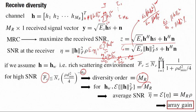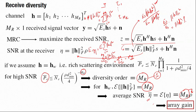The average SNR has an MR factor on top of the AWGN SNR, which means there is an array gain. So with pure receive diversity we have two important things: the diversity gain and the array gain.